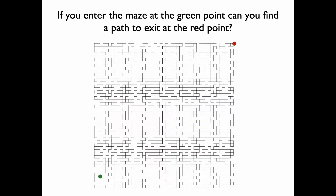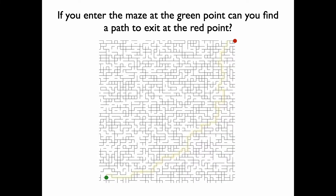We begin with a classic application of a randomized walk: finding your way out of a maze. Imagine that you are at the green point and want to find your way to the exit at the red point. Here you are meant to walk on the lines, not in the corridors. There is actually a path connecting the green and red dots — here's an example of one you can see with a faint yellow line.